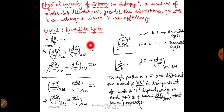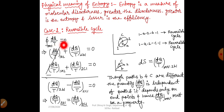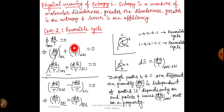We will try to understand the value of entropy for a reversible cycle, for an irreversible cycle, and for an adiabatic process. From the Clausius inequality, we have the equation: cyclic integral of δq/T ≤ 0 — less than for irreversible, equal to zero for reversible. So for a reversible cycle, the cyclic integral of δq/T = 0. In this diagram, there are three paths: path A, path B, and path C — all reversible cycles.